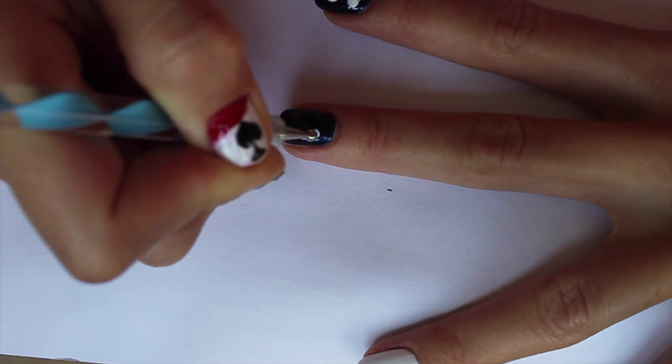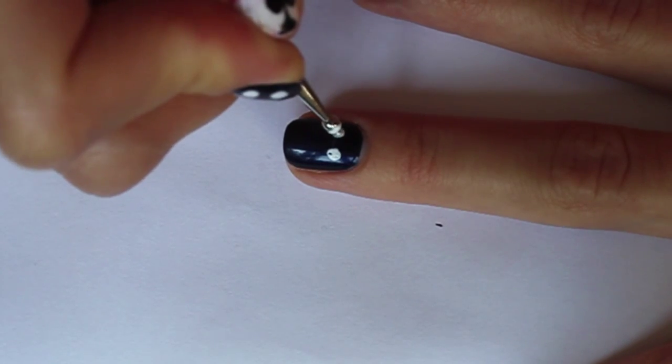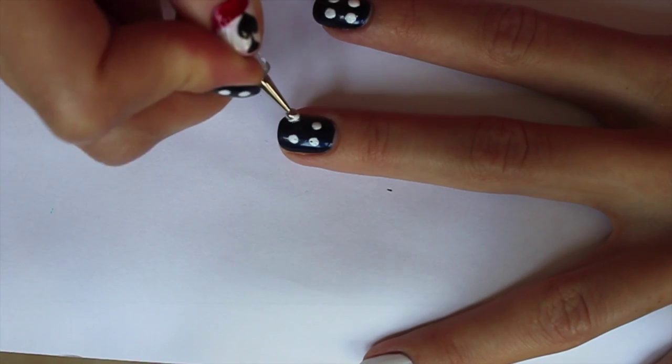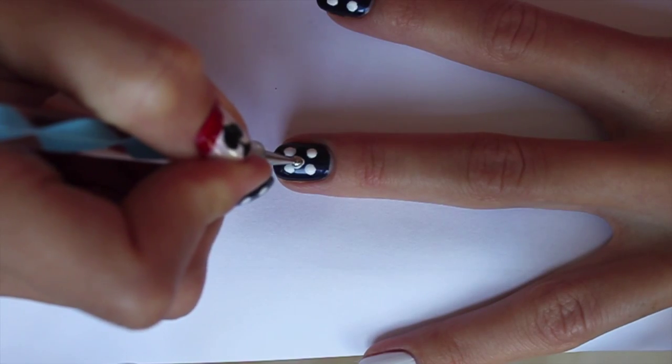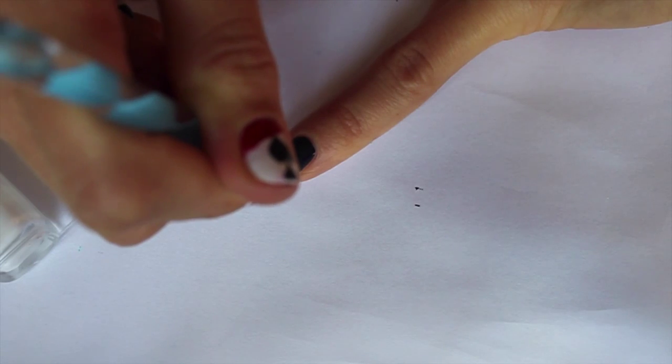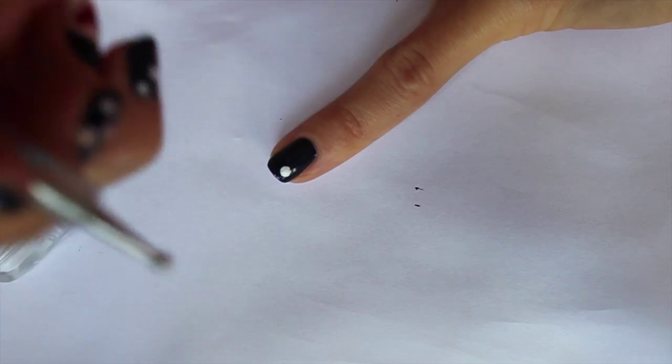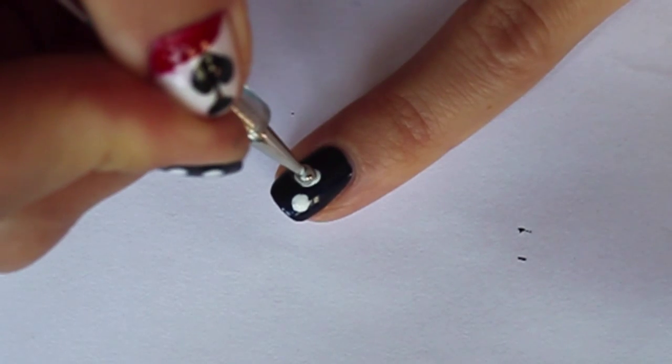Create five dots on the middle finger in the same technique. If the dots look not big enough, just add more polish. Carefully place three dots on the pinky. You can create any amount of dots from one to six as you wish.